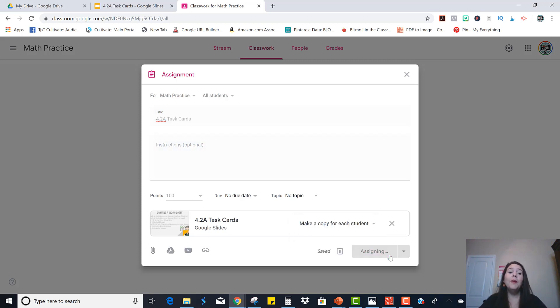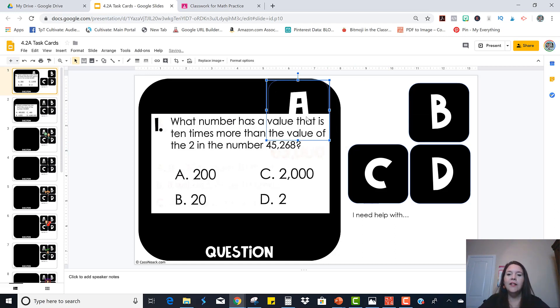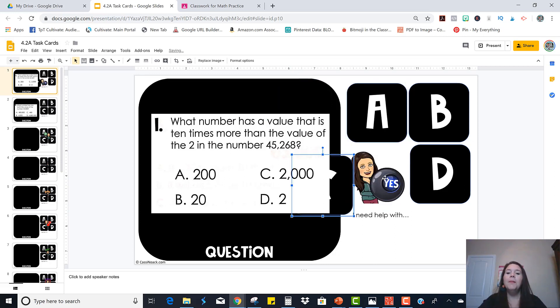When the students open the assignment from their Google Classroom, what they're going to see is exactly this. How they use this to be self-checking is they just solve the problem on scratch paper or whiteboard, and then when they think they know the answer they drag the answer away and see if there is that visual feedback. So A was not right but C was.